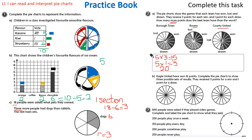In B, Eagle United have won 16 points. Complete the pie charts to show three possible sets of results. They receive three points for a win and one point for a draw. For example, if they got four wins: four times three equals 12 points from wins, so 16 take away 12 means they would need four draws. What about if they got five wins — how many draws would they need? And then I'll let you decide on your last ones.